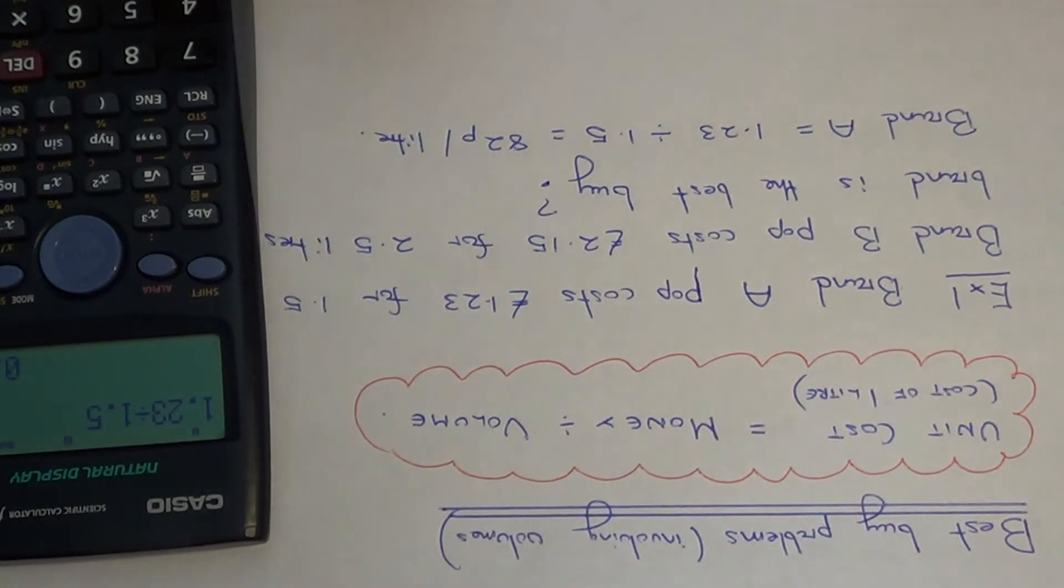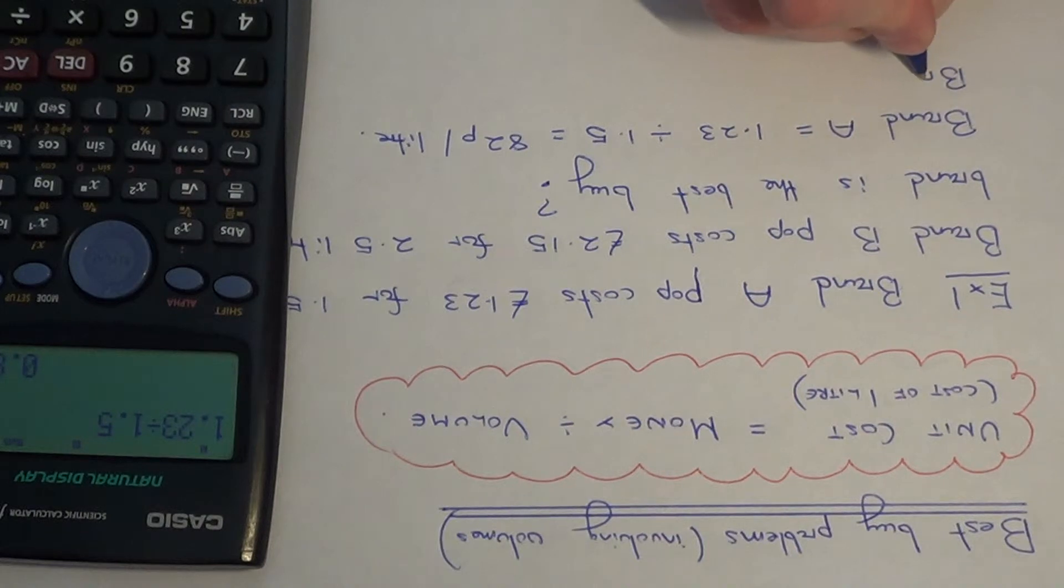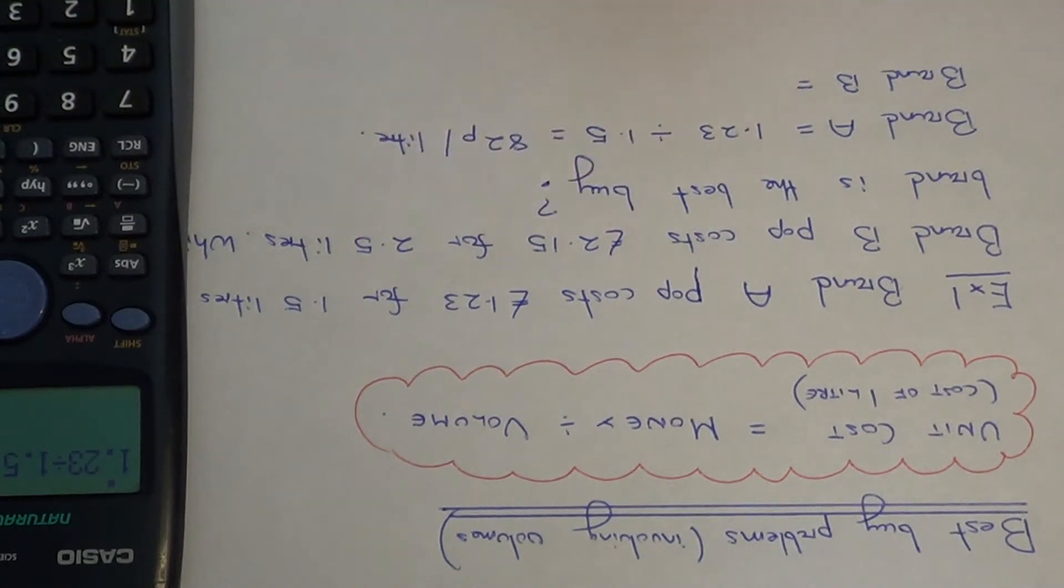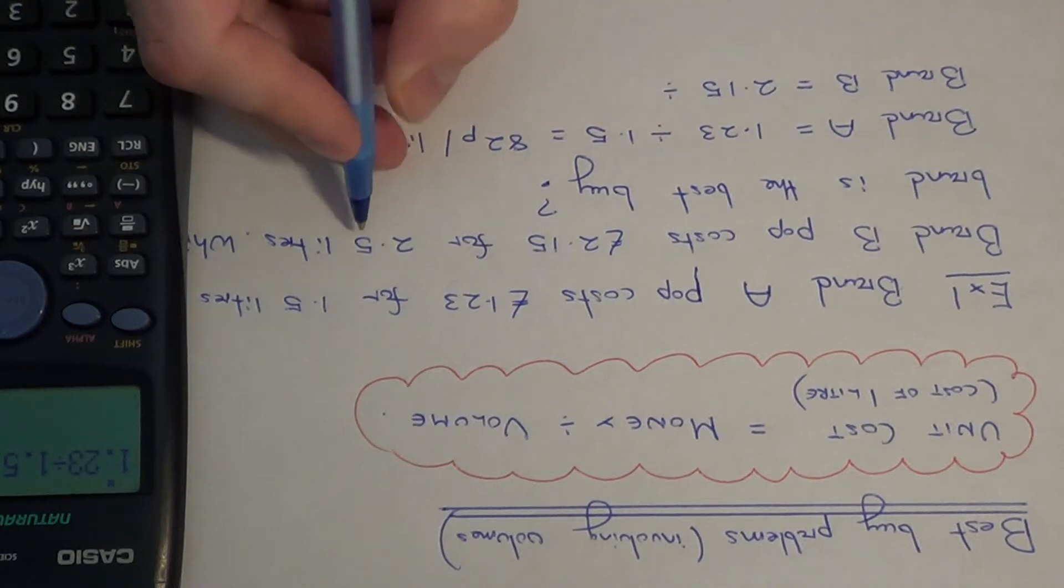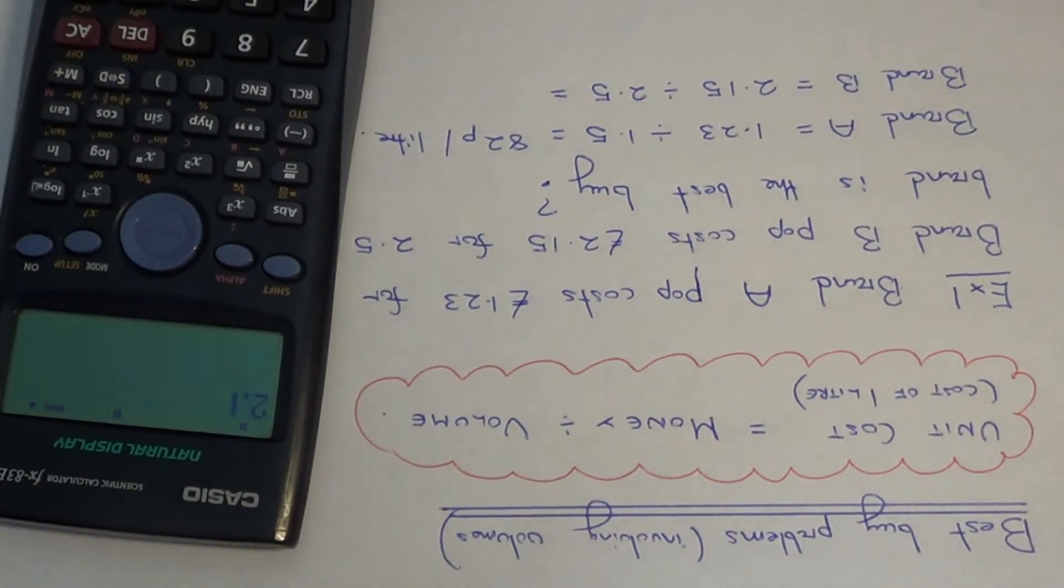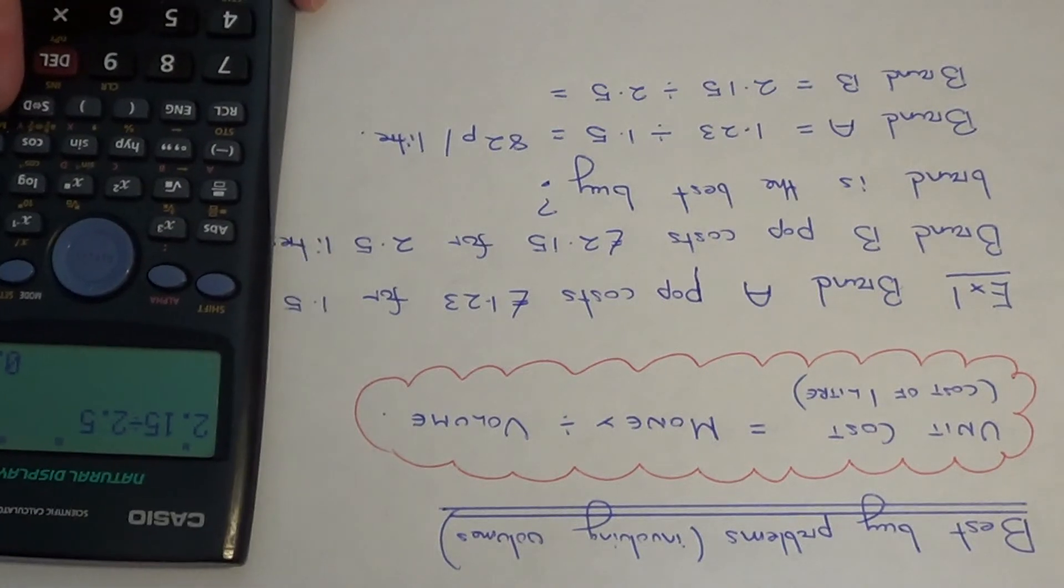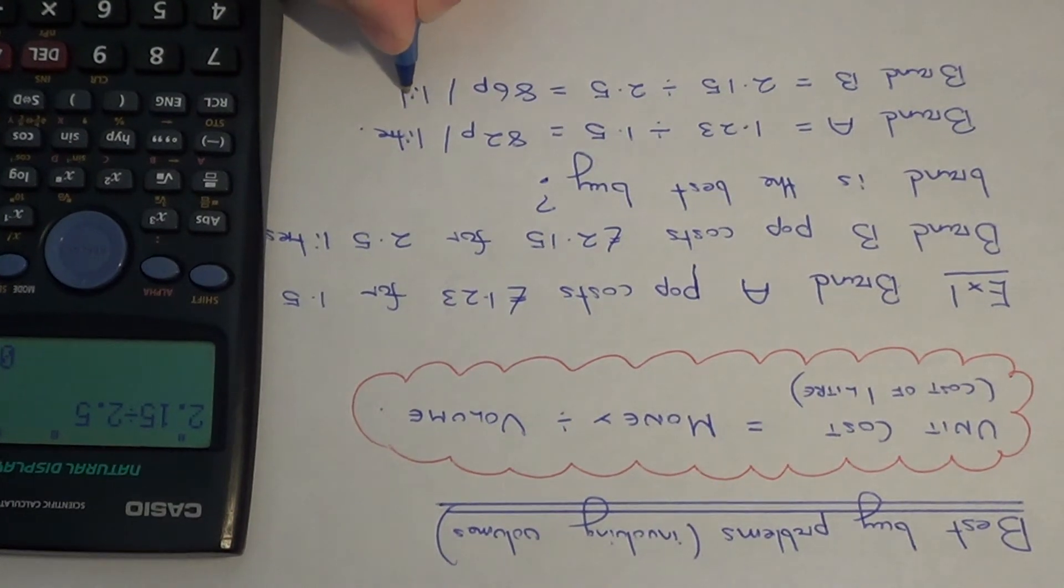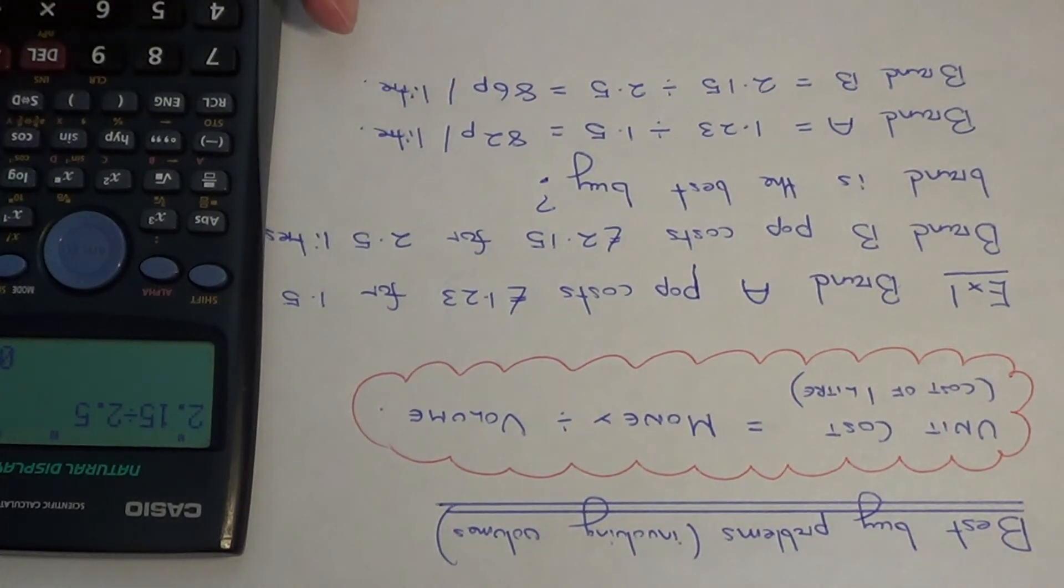We just need to repeat this now for Brand B. For Brand B we're getting 2.5 litres for £2.15. Again, divide the cost by the volume: £2.15 divided by 2.5. This comes out as 86p per litre, so this is a little bit more expensive.